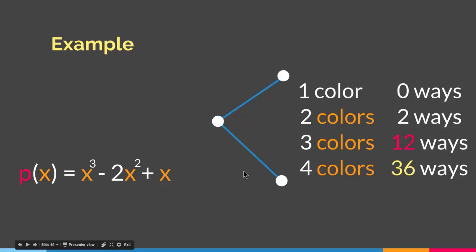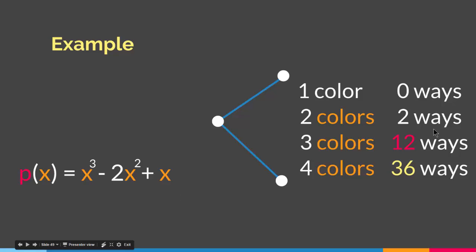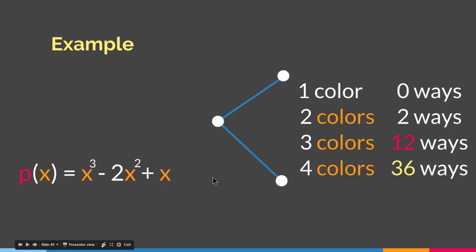Chromatic polynomials let us know how many distinct ways we can color a particular graph using a number of colors. For this graph with three vertices, the chromatic polynomial is p(x) = x³ - 2x² + x, where x is the number of colors. For example, if you plug in two: p(2) = 2³ - 2·2² + 2 = 8 - 8 + 2 = 2. So with two colors we have two ways. With three colors it gives us 12, with four colors 36, and with 100 colors you just plug in 100 and it instantly gives you how many distinct ways you can properly color the graph. That's why chromatic polynomials are important.